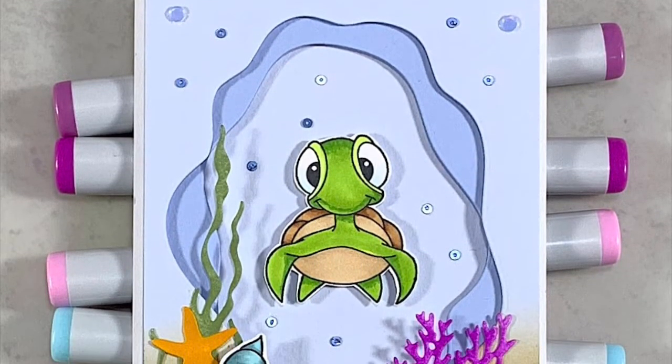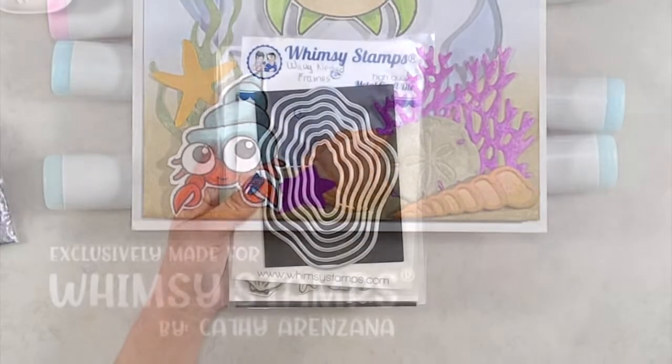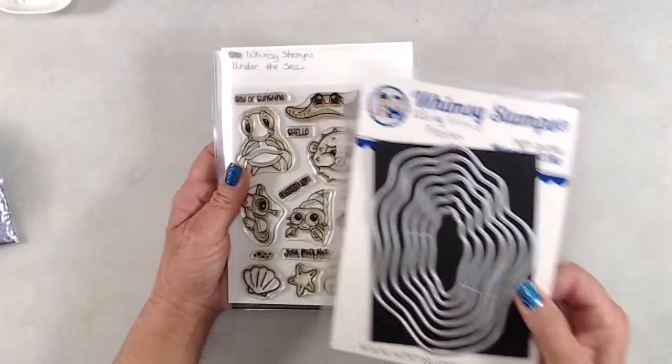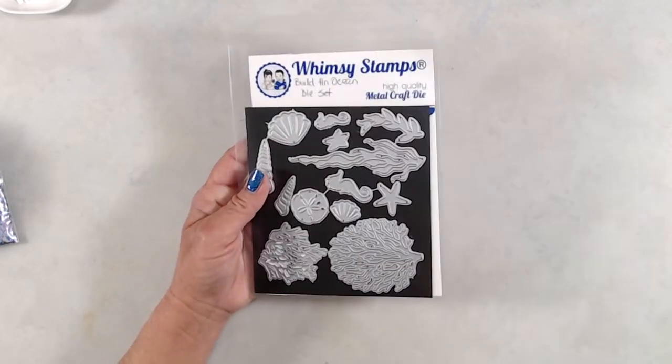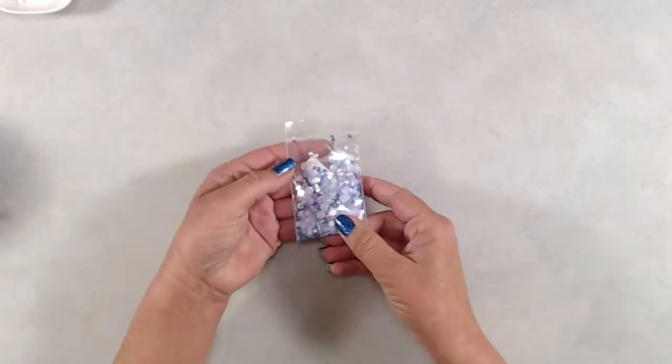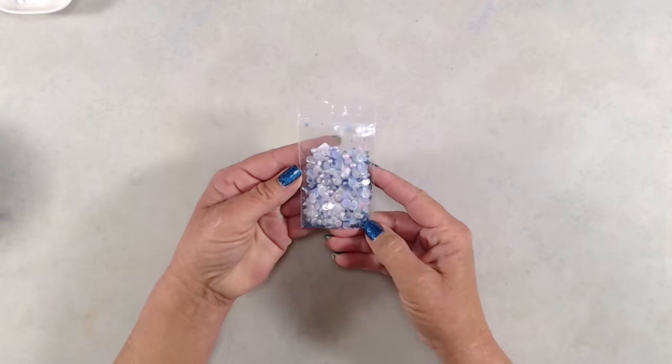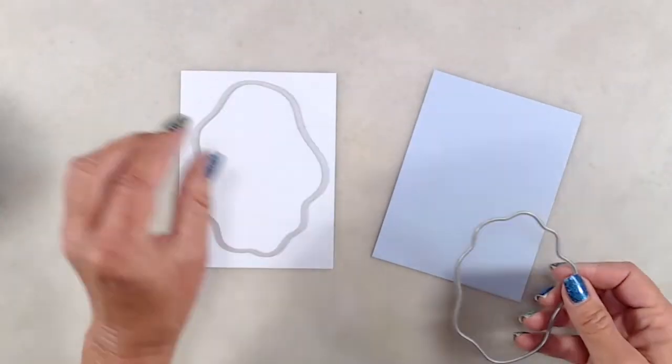Hi everyone, it's Kathy. Thank you so much for joining me today. I'll be creating an under the sea themed card using the wavy nested frames, the under the sea stamp set, build an ocean die set, and the blurry flurries one confetti mix. I started out with two pieces of blue cardstock, one darker than the other.